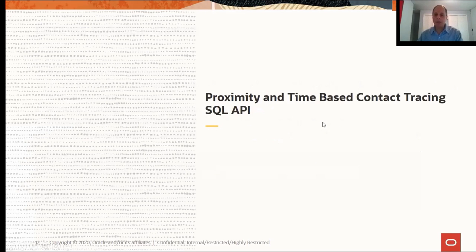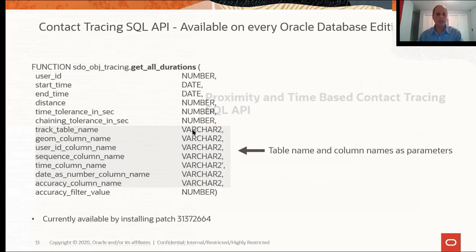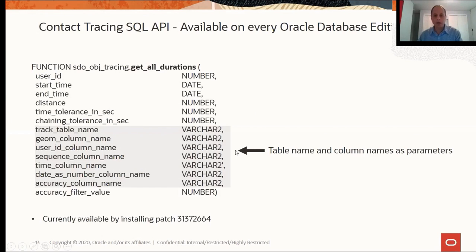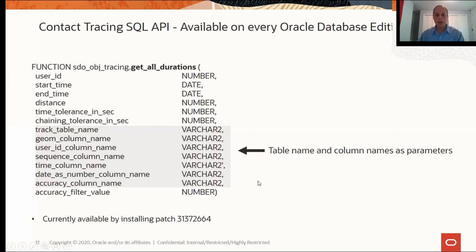Here's the actual proximity and time-based contact tracing SQL API. It has several parameters, most of which are just table names and column names — so you can use your own table with your own column names mapped to the ones described. The important input parameters are: the user ID you want to do contact tracing for, the start and end time for the trace, the distance to look for contacts within, the time tolerance, the chaining tolerance, and the accuracy value. This API is now publicly available on every Oracle database platform by installing a specific patch.